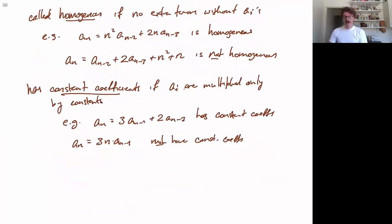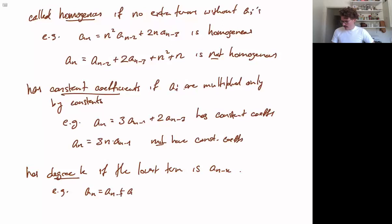And finally, the last piece of terminology that we want to introduce. A recurrence has degree k if the lowest term, in the sense of furthest back in the sequence, is an minus k. So this k is this k. For example, an equals an minus 1 plus an minus 2. The familiar Fibonacci recurrence has degree 2. Because this is the furthest back term that is appearing, and it's an minus 2.